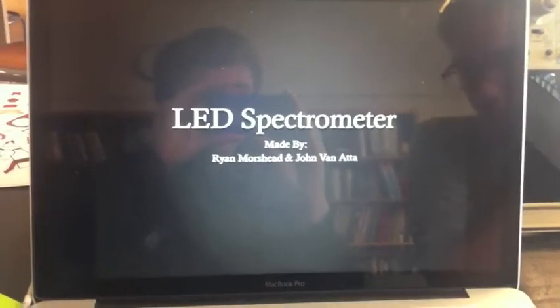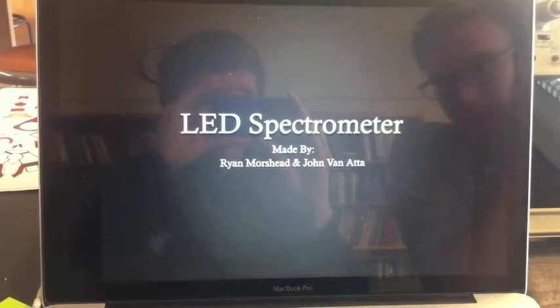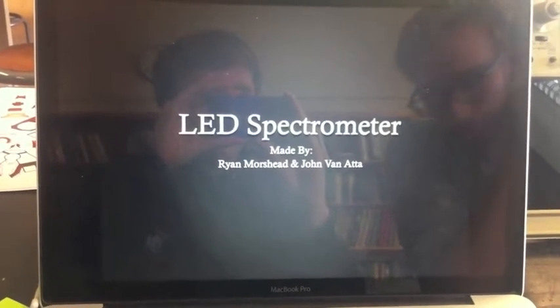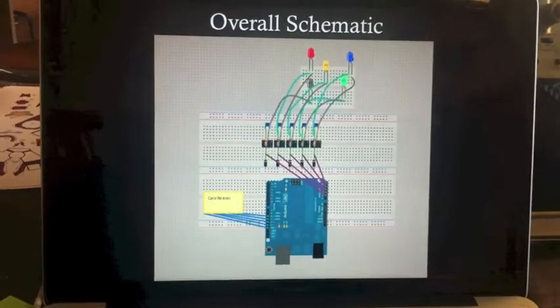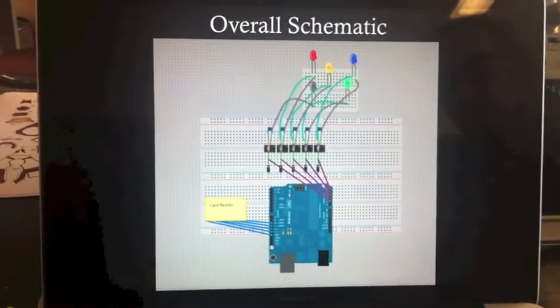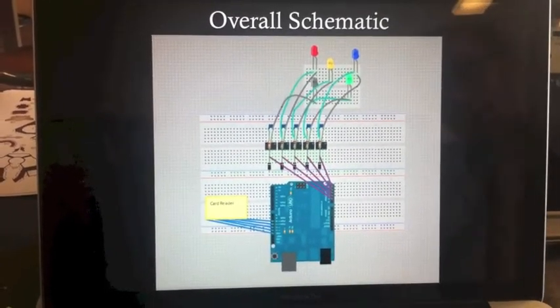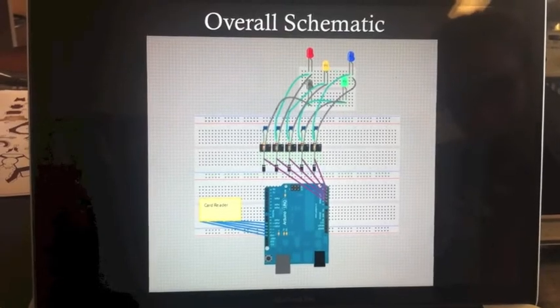Okay, so for our project John and I made an LED spectrometer. Here's our overall schematic. The gist of this is that we used LED reverse current to produce a voltage which we could read into the Arduino.